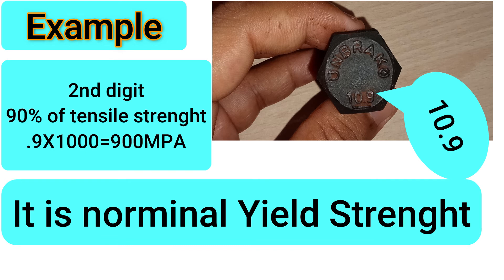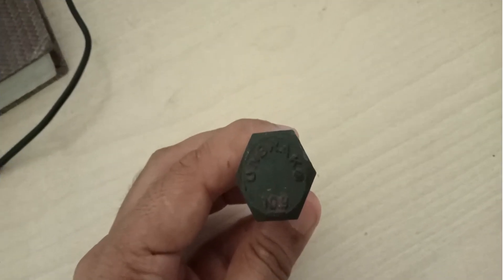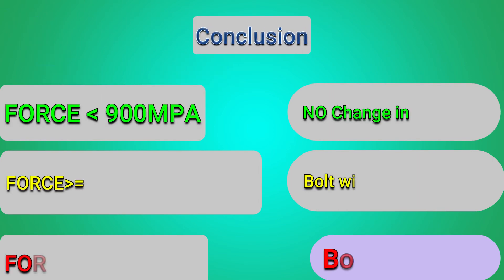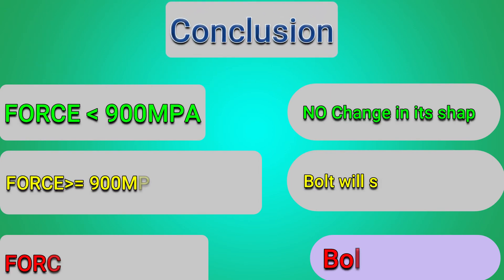Now what does this yield strength mean? Yield strength is the maximum stress that can be applied before it changes its shape permanently. So I can conclude that considering this example, if you apply a force less than 900 megapascal, the bolt won't change its shape.